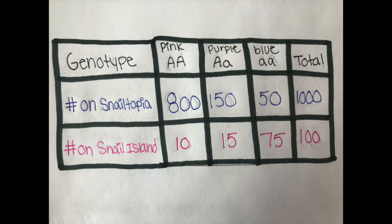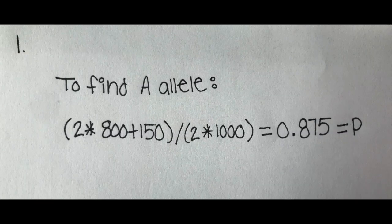This table shows the genotypes of the snails on the island and of Snail-topia before the migration. Now that we know this, we can calculate the variables that we need.